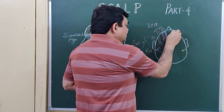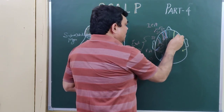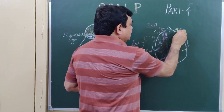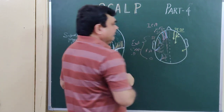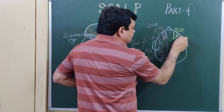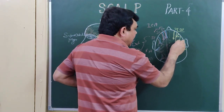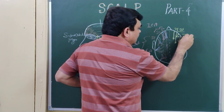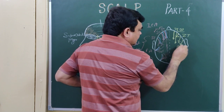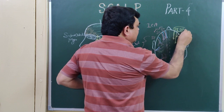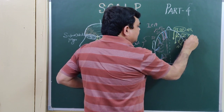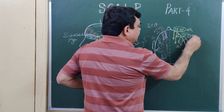The sensory branches are: supratrochlear and supraorbital — these are branches of the ophthalmic division of the trigeminal nerve — and zygomaticotemporal and auriculotemporal.